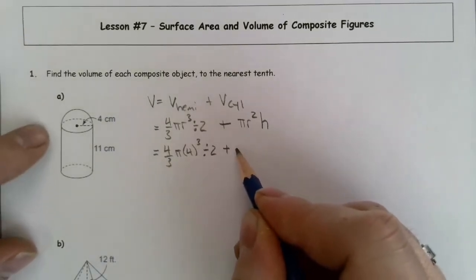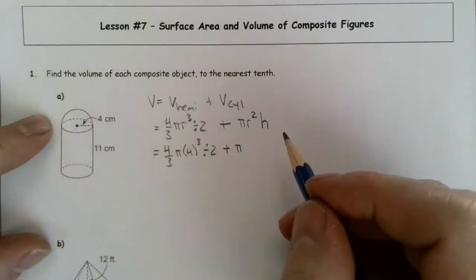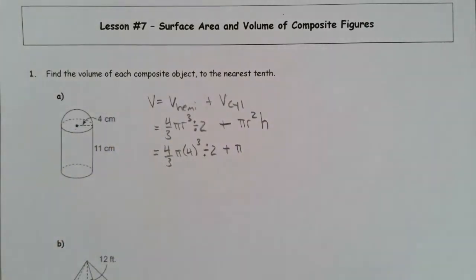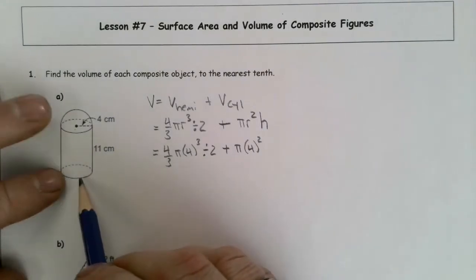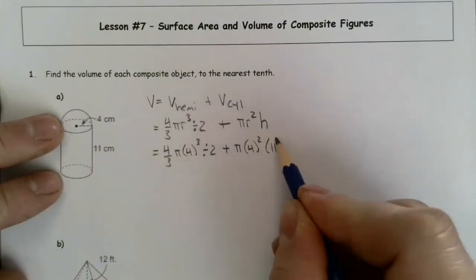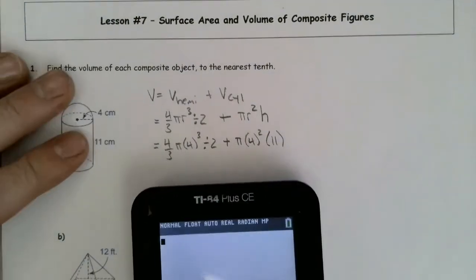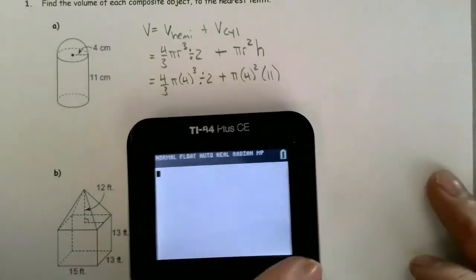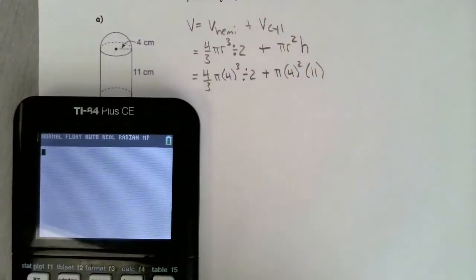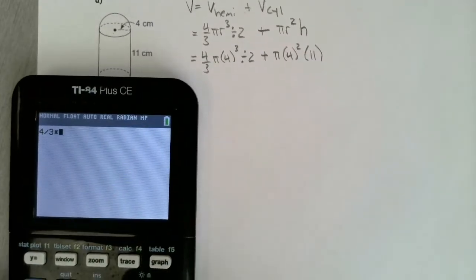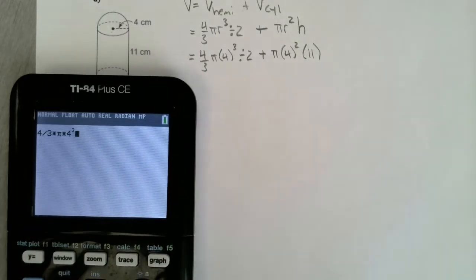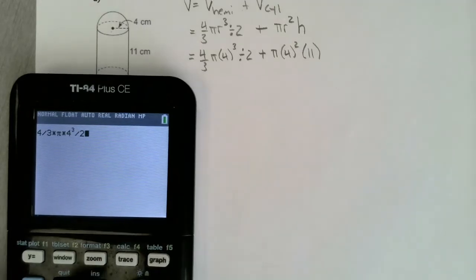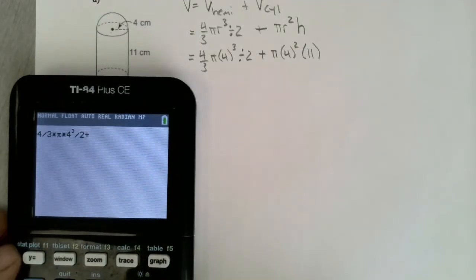I'm going to add to that pi times the radius of the cylinder, which is the same as the radius of the hemisphere — that's why they fit together. So that's going to be four squared. The distance between the two bases of the cylinder is 11, that's my height. So I put the 11 there.